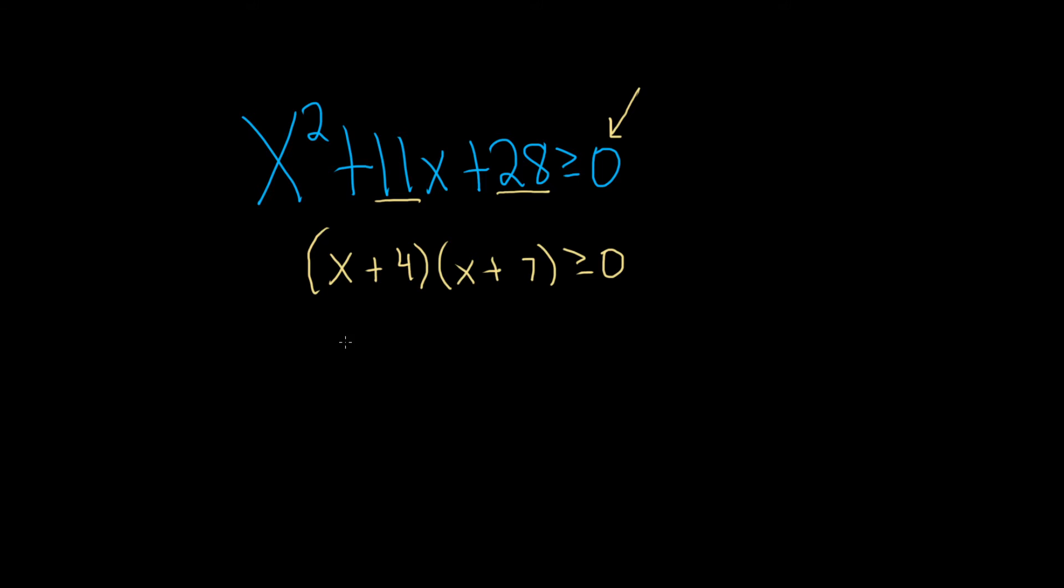The next step in the test point method is to take each of these factors and set it equal to 0. And again, I want to emphasize that this is a step. This is not something that follows algebraically from this. It's just something that we kind of just memorize and do. It's a process. So just take each one and set it equal to 0. And then we solve each of these for x. So in the first case, we just subtract 4, and we get negative 4. And then over here, we subtract 7, and we get negative 7.